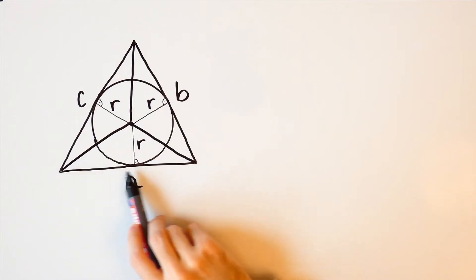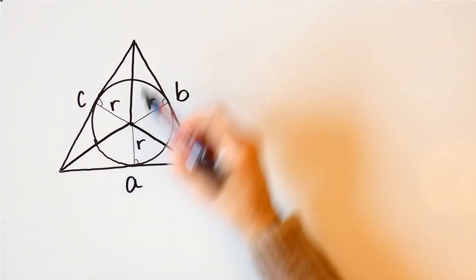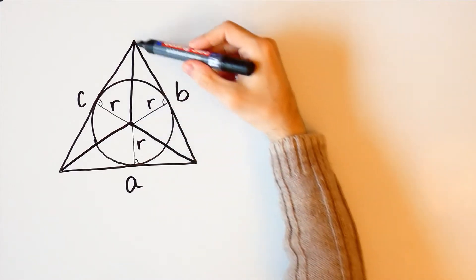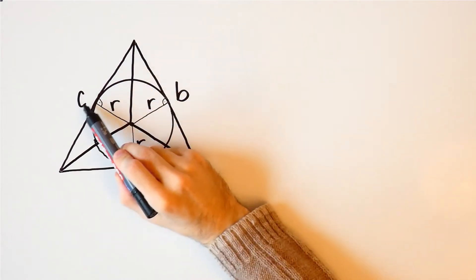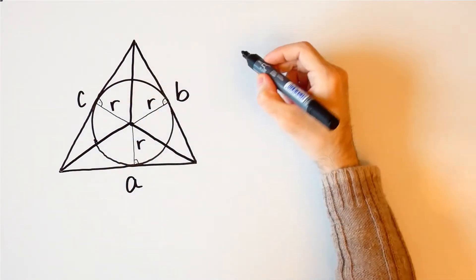But that means that the area of this triangle is a times r over 2, the area of this triangle is b times r over 2 and the area of this triangle is c times r over 2.